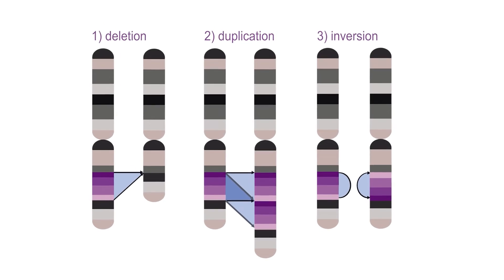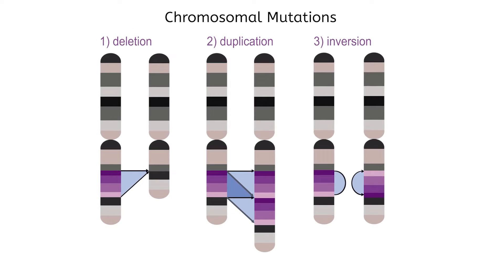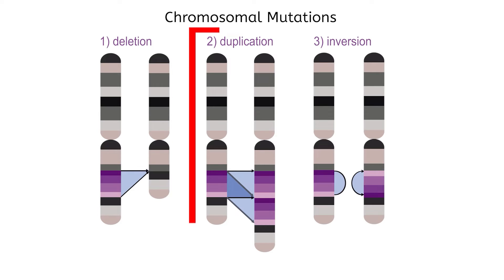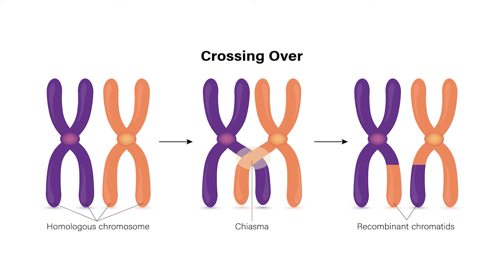Though Down syndrome is one of the most well-known chromosomal mutations, it's far from being the only possible change to the structure of chromosomes. Other types of chromosomal mutations include deletion, duplication, and inversion. Many times, these mutations occur during crossing over when genetic material is exchanged between chromosomes in meiosis. If the chromosomes are not aligned properly when the exchange takes place, genes can end up in a different place or be missing completely.